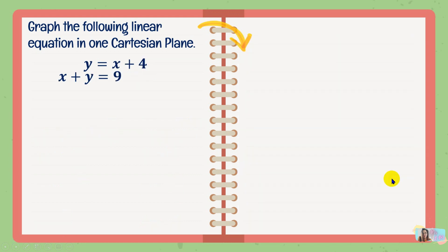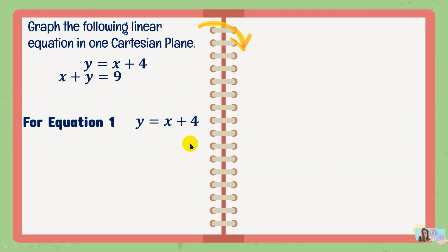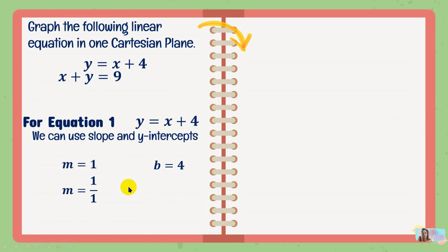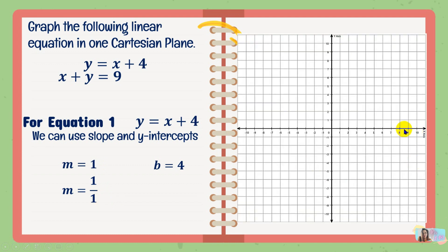Now let's have our second example. We have y equals x plus 4 and x plus y equals 9. For the first linear equation, y equals x plus 4, this is already written in slope-intercept form, so we use the slope and y-intercept. The slope is positive 1 — the numerical coefficient of x — and the y-intercept is positive 4. Since slope is 1 over 1, that means 1 unit rise and 1 unit run. We plot the y-intercept at positive 4 on the y-axis, then 1 unit upward and 1 unit to the right for the second point.